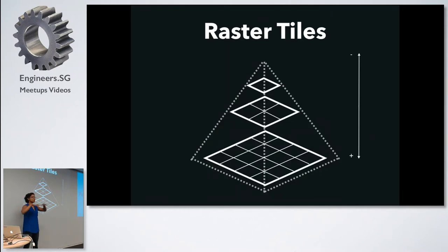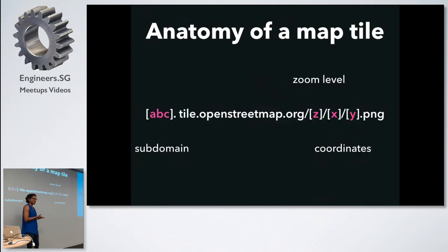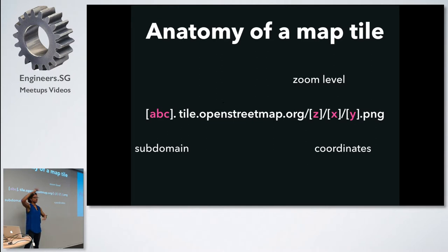As you zoom in and out, you're requesting more or fewer tiles depending on the zoom level. If you're zoomed out, the level of detail is less, so you need fewer tiles. If you zoom in, there's more detail, so you need more tiles. That's the basics of how it works. This is the anatomy of a map tile: you have a subdomain, then your tile service — OpenStreetMap is one, MapZen is another. Then you give it the zoom and XY coordinates based on where exactly the map is relative to location.